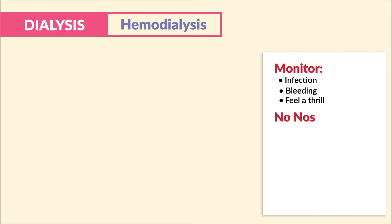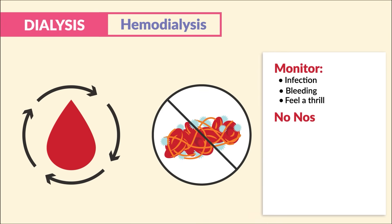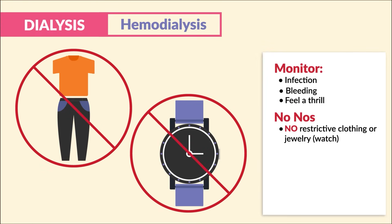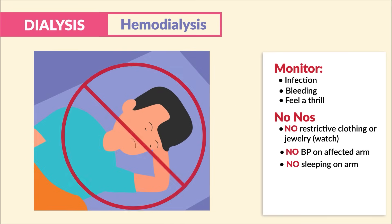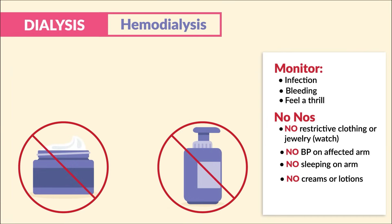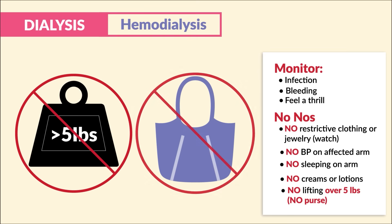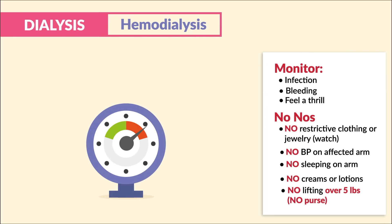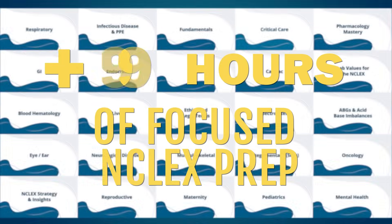Now for the no-nos — we're trying to promote adequate blood flow and prevent clotting. We must avoid all pressure: no restrictive clothing or jewelry, especially watches or bracelets. No blood pressure on the affected arm. No sleeping on that arm. No creams or lotions in terms of infection. No lifting over five pounds — a key term is no purse. These love to show up on exams as select-all-that-apply questions, so think of the no-nos as no pressure.